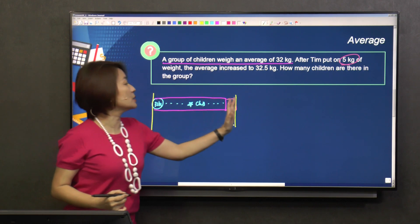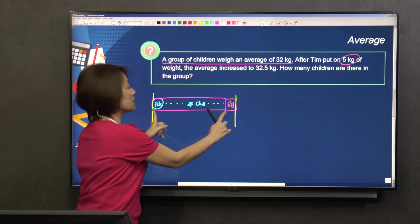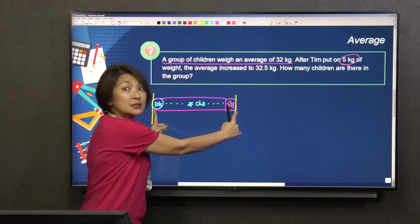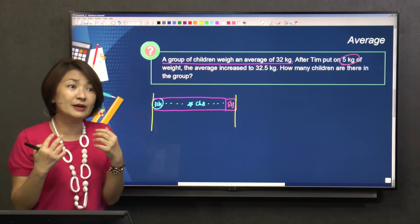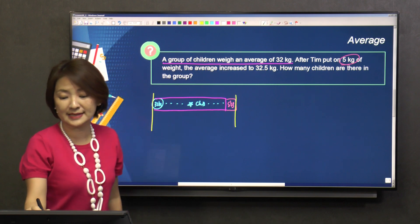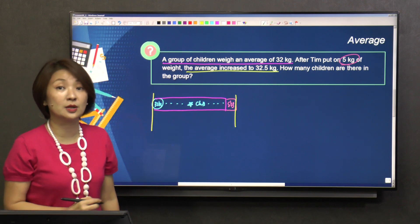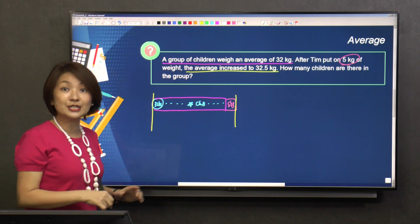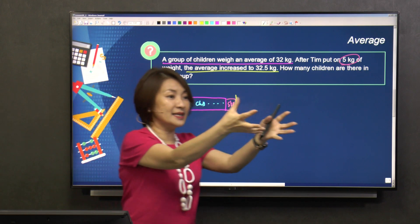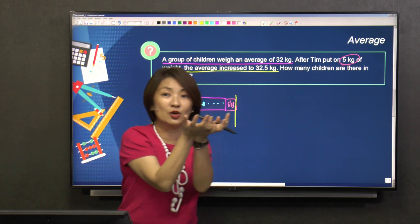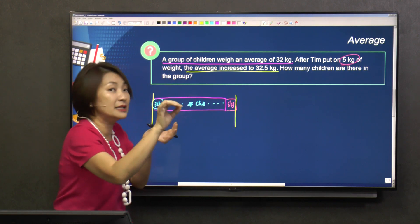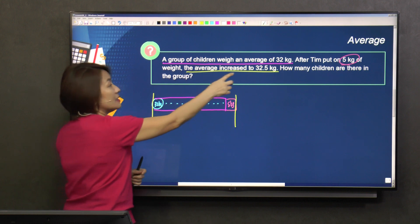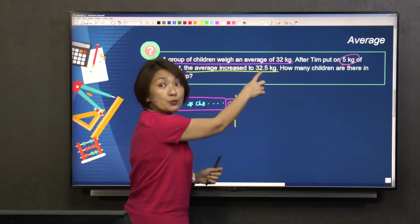You see that? From here to here. This was the old total, plus 5 kilograms, this becomes the new total. And the new total has another way of saying, they say the average increased to 32.5 kilograms. Weight distribution, I take Tim's extra 5 kilograms, and I'm going to give a little bit to every one of the children. A little bit of how many. If you look at it, this is 32 kilograms, this is 32.5 kilograms.